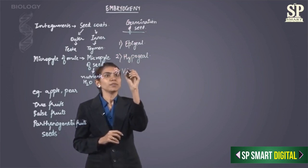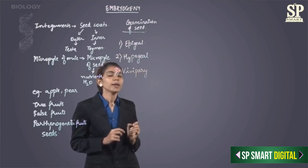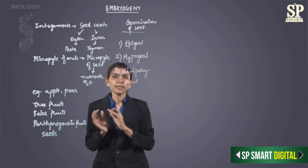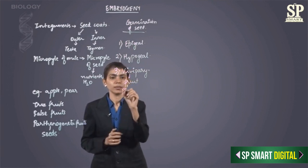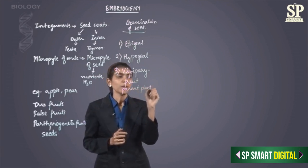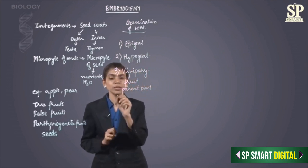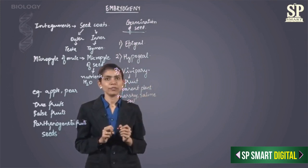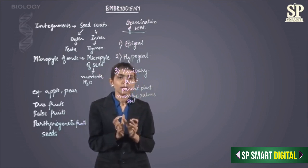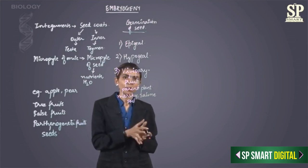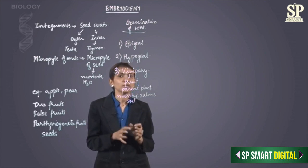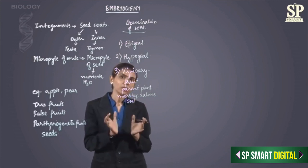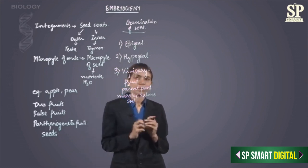The third is called vivipary. In vivipary, the germination of the seed takes place inside the fruit, and this occurs when the fruit is attached to the parent plant. This viviparous mode is seen mainly in marshy saline soil wherein there is less oxygen available. As germination takes place the fruit becomes heavier, the seed falls from the parent plant and grows onto the mud, developing radicle roots, the plumule, and developing into a new plant completely. But the initial germination is taking place inside the fruit.